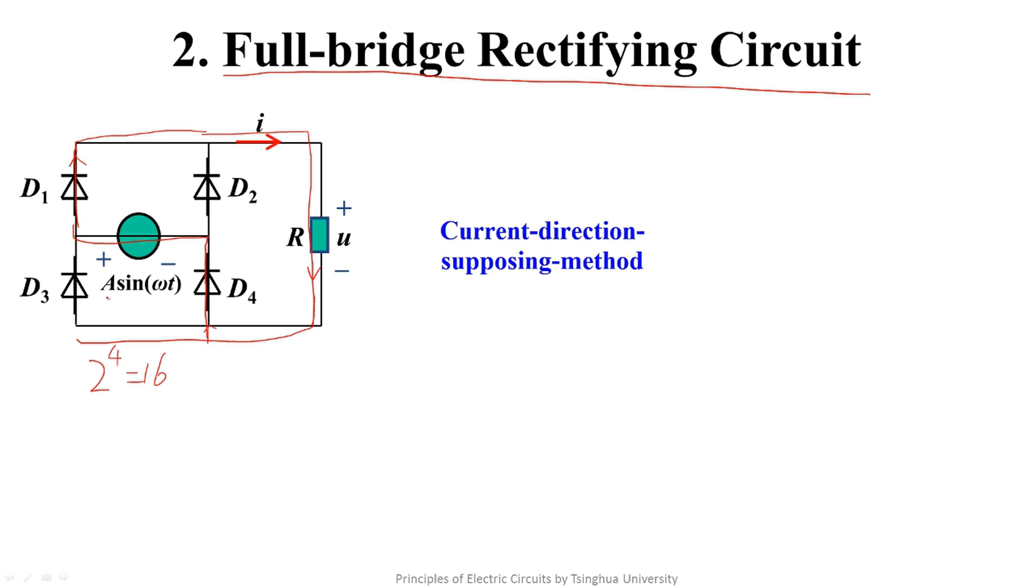So to form a closed current loop, you need a positive current. What can make this a positive current value? I equals A times sine omega t over R. This value needs to be greater than zero. In the case that A and R are greater than zero, sine omega t needs to be greater than zero.